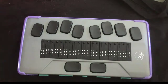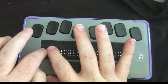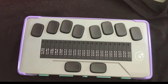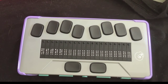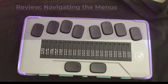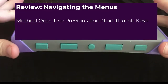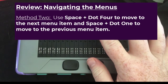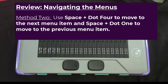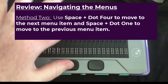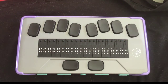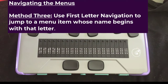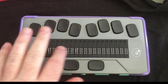Right now I'm focused on the main menu, and it says 'editor,' which tells me I'm at the top of the main menu. We're going to navigate down to the date and time settings. There are three different options: the first is using the previous and next keys for navigating menus; the second is using dots four and space bar to move forward, and dots one and space bar to move backwards; the third — and probably most logical — is to press the first letter of the item. In our case it's date and time, so we press D, and here we are at date and time.